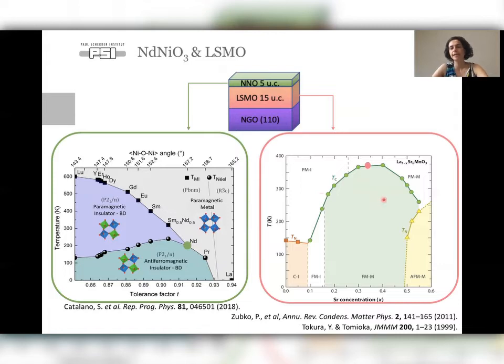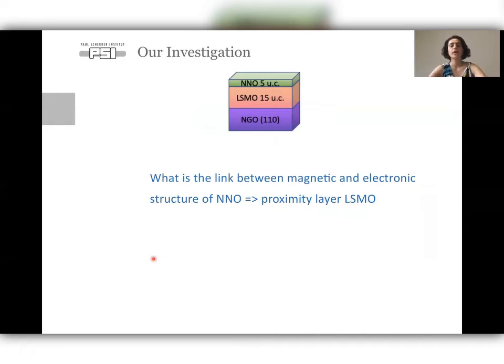So the system goes from metal to insulator and from paramagnetic to antiferromagnetic at the same temperature. And we want to tune one of these properties and observe what happens to the other one. For that, we have used the proximity layer, which is LSMO with this 33% doping, which is the prototypical optimal doping because it has the highest TC. So below TC, LSMO is ferromagnetic metallic. So you're going to have a ferromagnetic metallic system in proximity to an antiferromagnetic insulator at low temperatures. And our aim is to see what is the link between the magnetic and electronic structure of NNO by using this proximity layer.